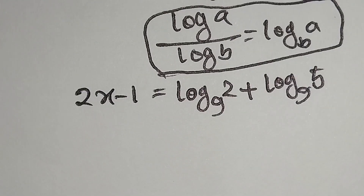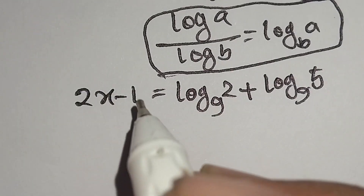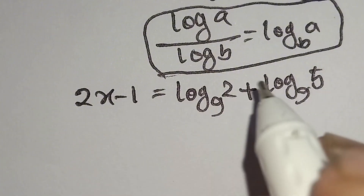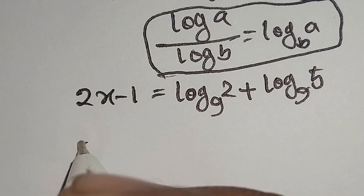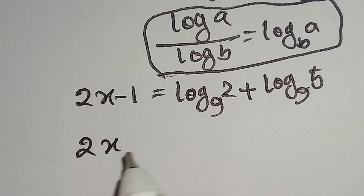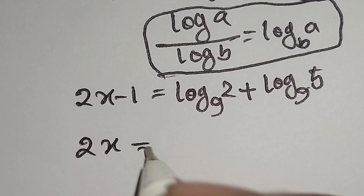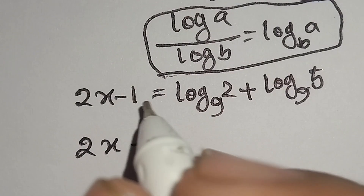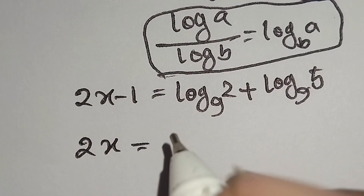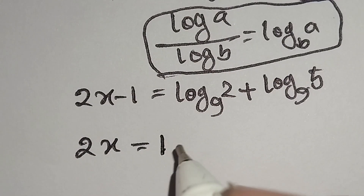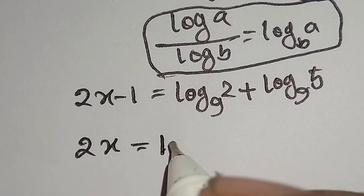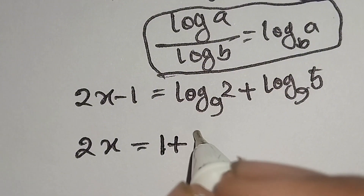Now we will move the negative 1 to the right side, so it becomes positive 1. We get 2x is equal to 1 plus log 2 to the base 9 plus log 5 to the base 9.